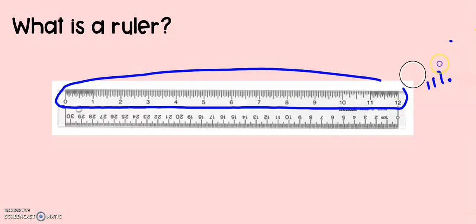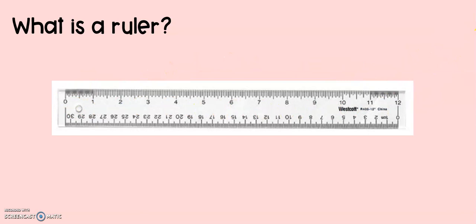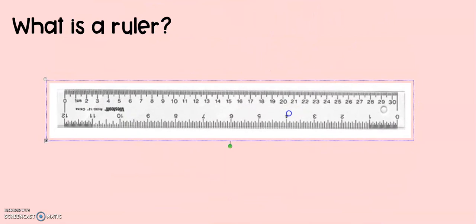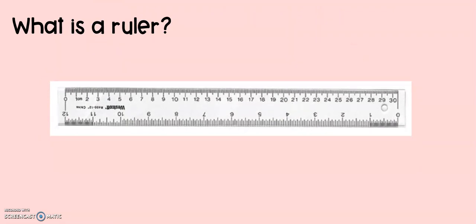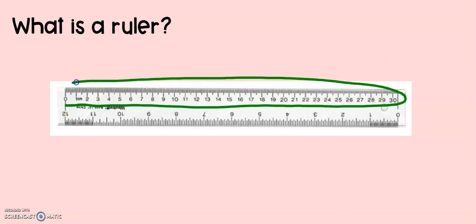The other side of our ruler also has numbers on it. On this side of our ruler, our numbers go from zero and they go all the way up to 30. There are way more numbers on this side. This side of our ruler measures in centimeters. Centimeters are smaller than inches. We can fit 30 centimeters on this ruler, but we could only fit 12 inches. We can use the letters CM and then put a period in order to say that it is centimeters.